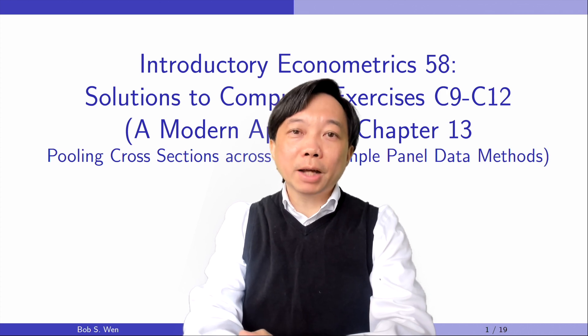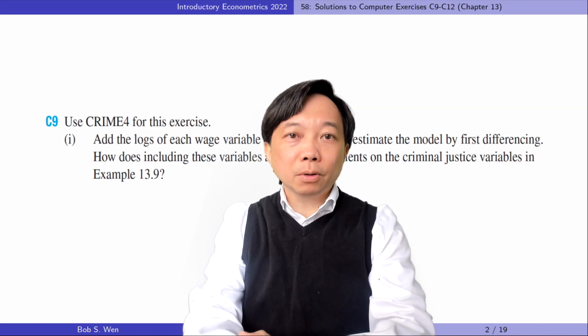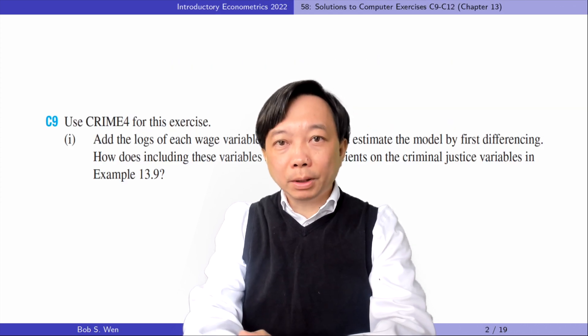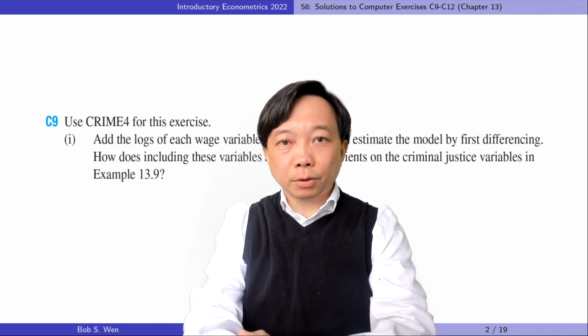Let's do computer exercise 9. In part 1, we add the log of each wage variable in the data set and estimate the model by first differencing. How does including these variables affect the coefficients on the criminal justice variables in example 13.9?